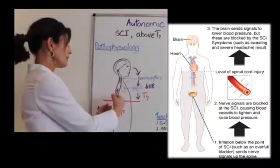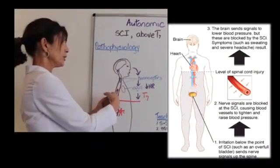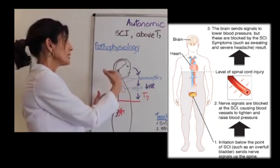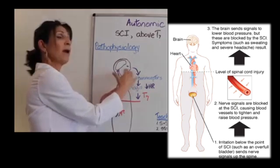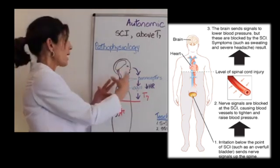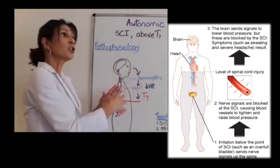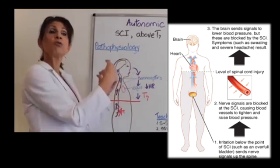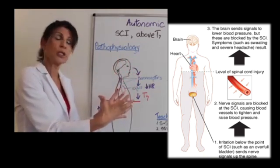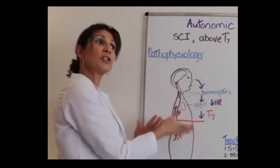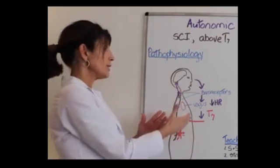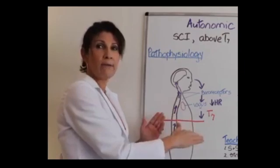As the vessels are continuing to constrict, trying to send signals to the brain, what happens is before it even gets to the brain, these baroreceptors in the carotids and the aortic arch know that it's supposed to relax the vessels, but it can't get the signal down to lower the blood pressure in the lower extremities because the cord is severed.